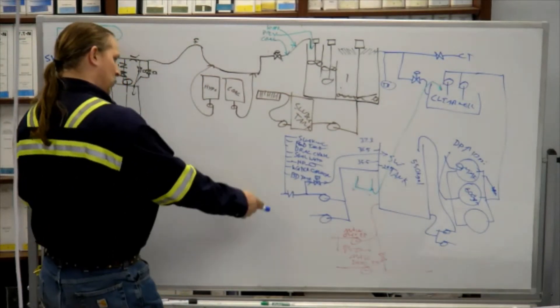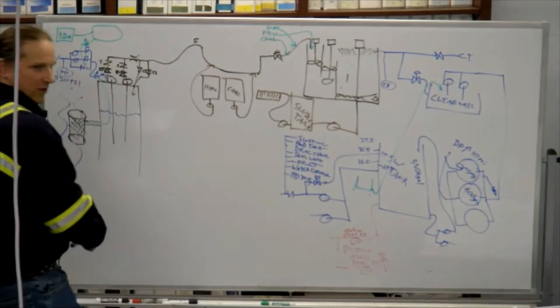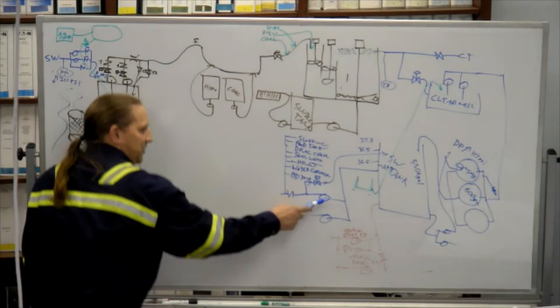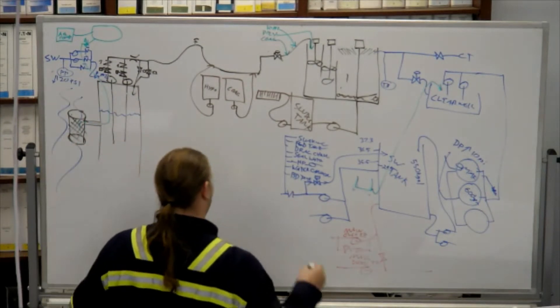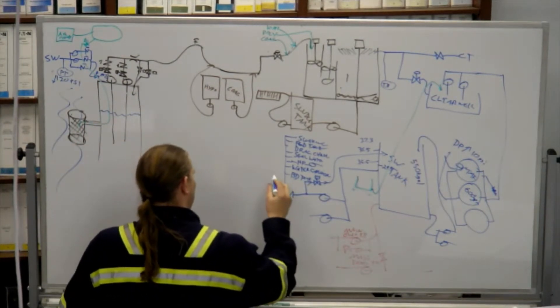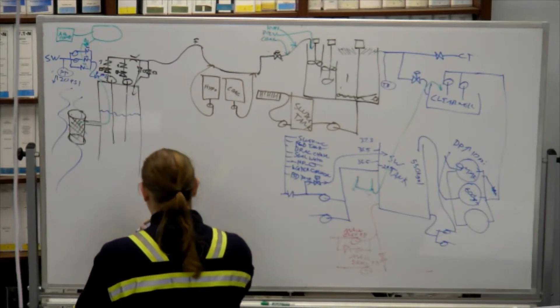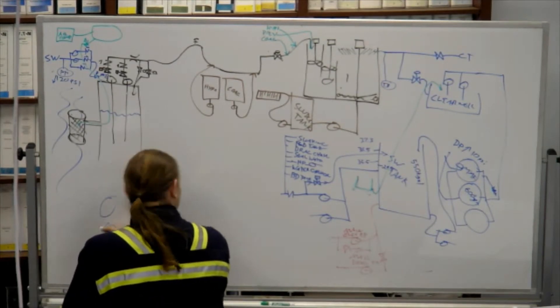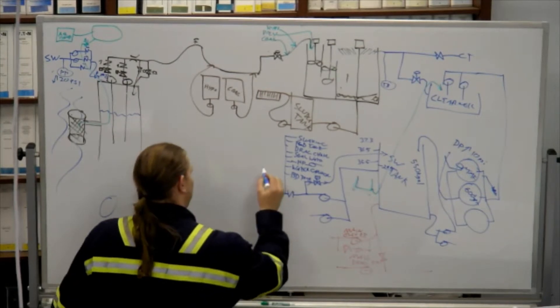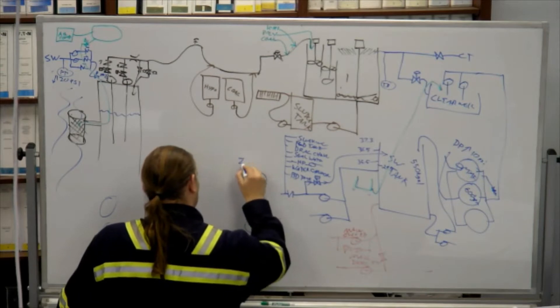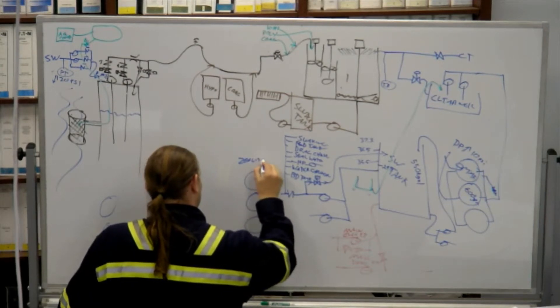Alright, the other thing we do with surface water is we make demon water. So after the surface water pumps on the way to making demon water, where do we go? Mixed bed is the last step. Softeners. Fuel light softeners.